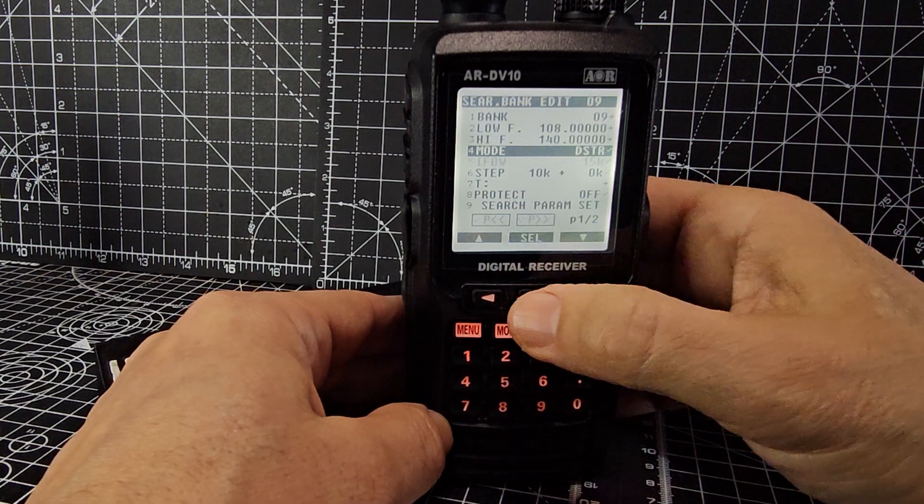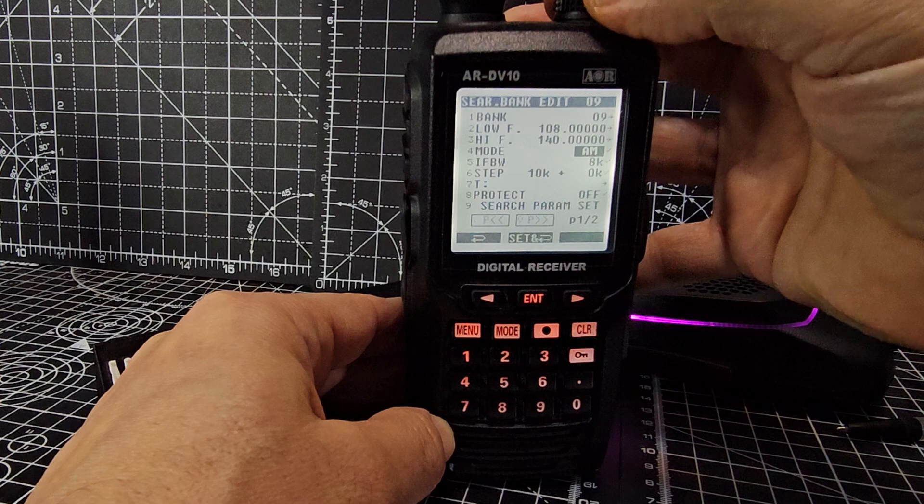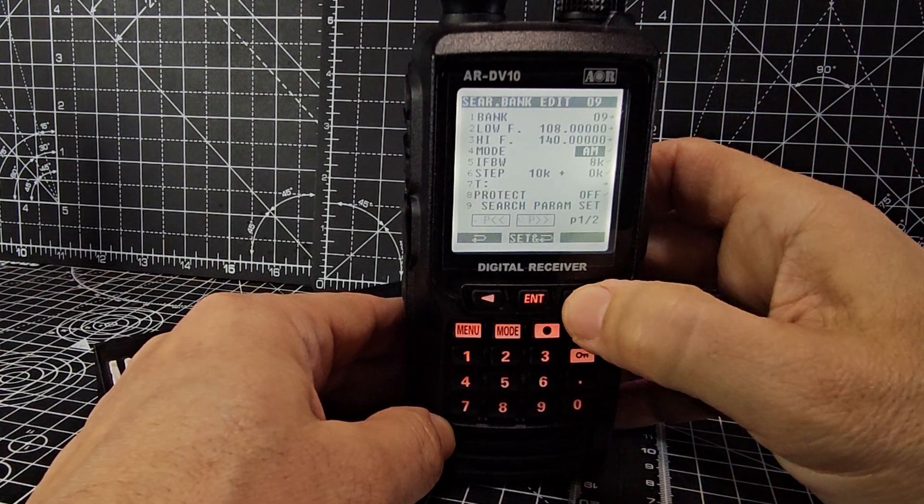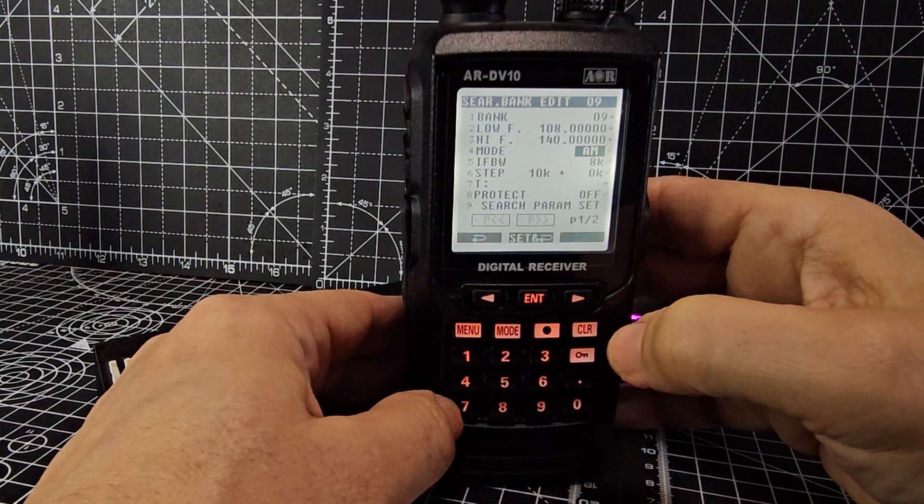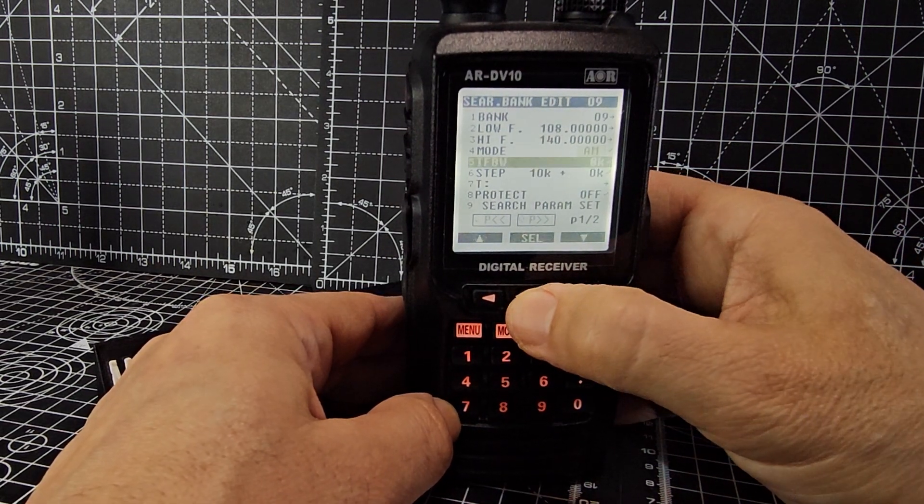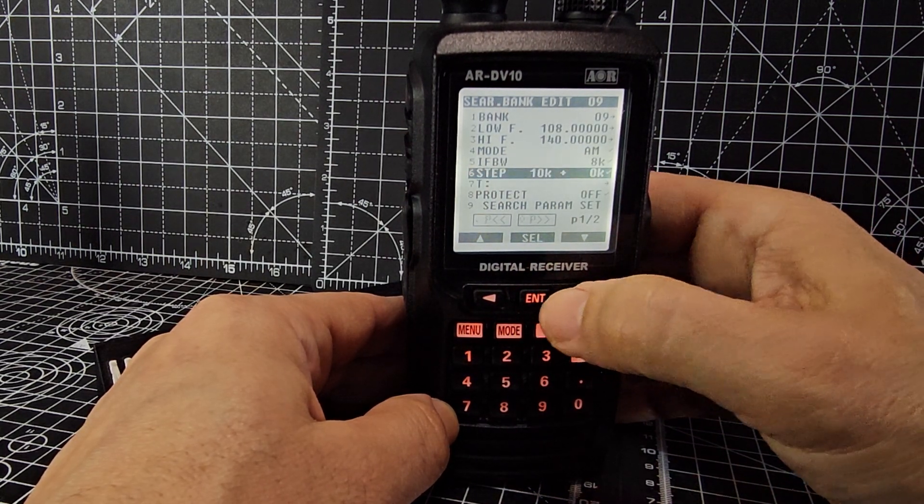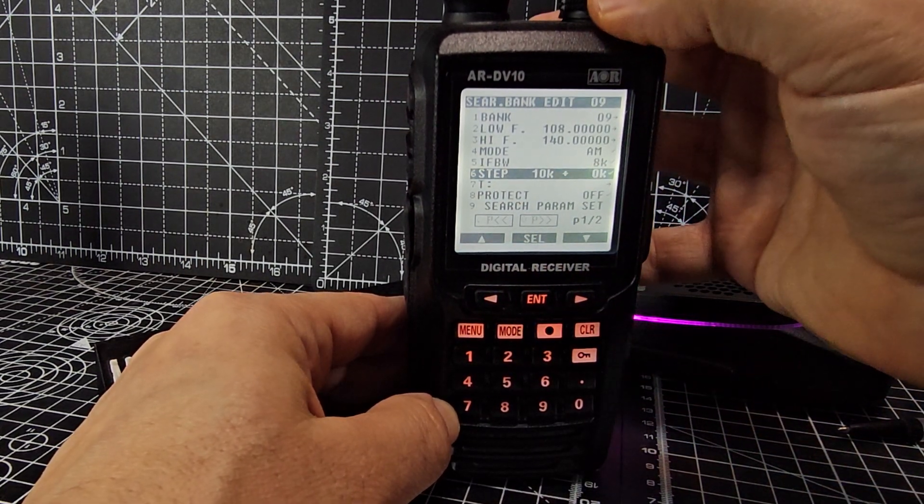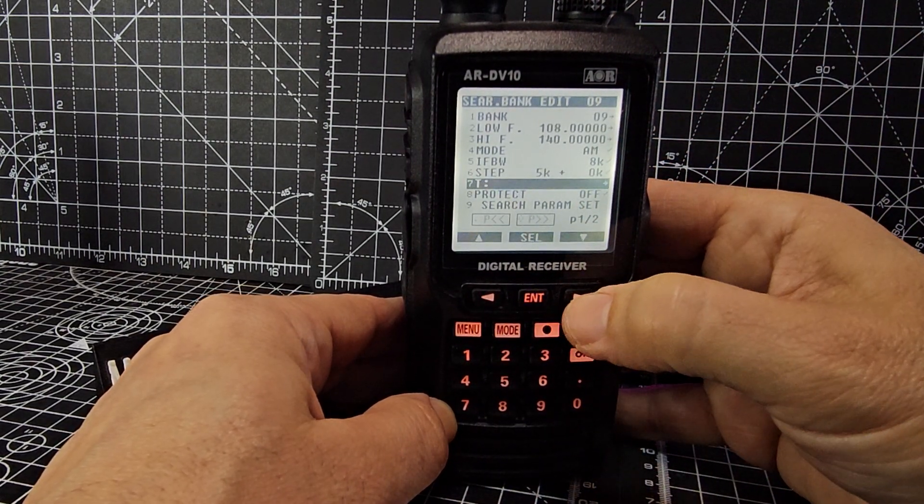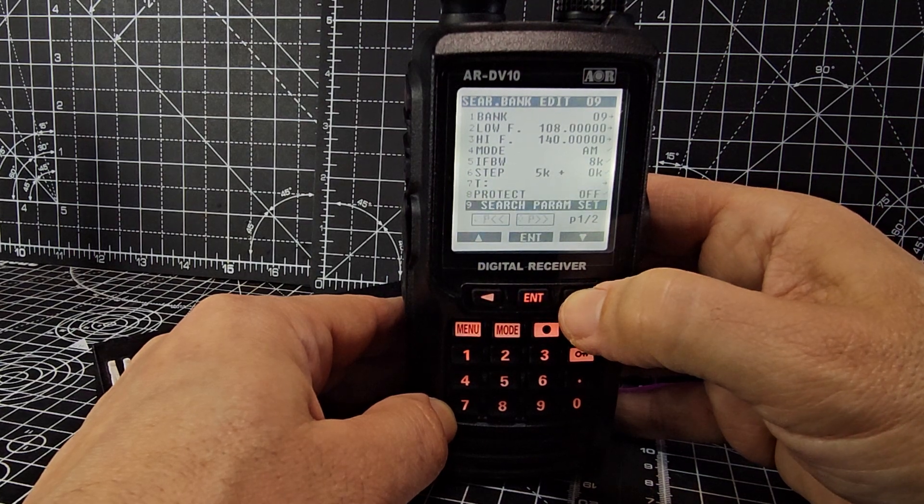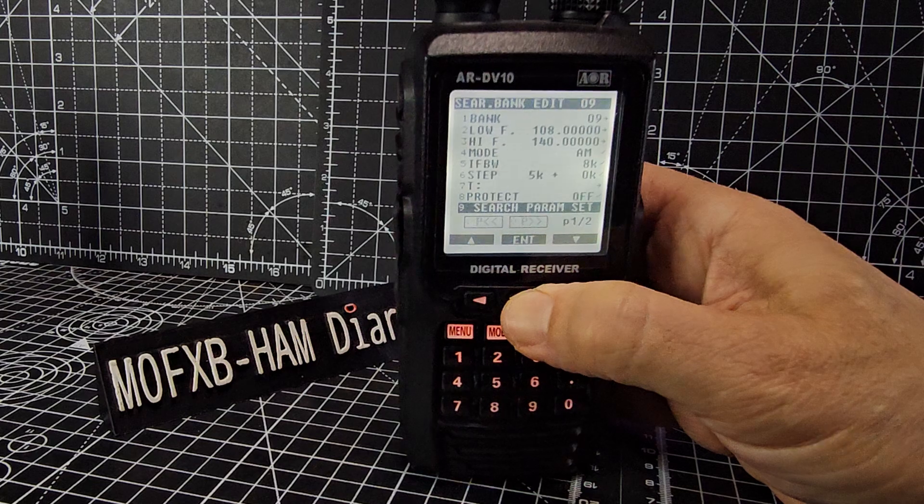Enter, then the mode. So we can just turn it with that. You want AM, you can do auto but I'm going to do AM. Then we've got the IF bandwidth, which I'm not going to set, so we're just going to enter, leave that alone, and that's fine. Enter the step. So we can do that now if you want. So we'll do 5, enter, and I think that's all we need to do. And then we're going to do search parameter set. So that's basically a save. And remember it's bank 9. So we go enter.